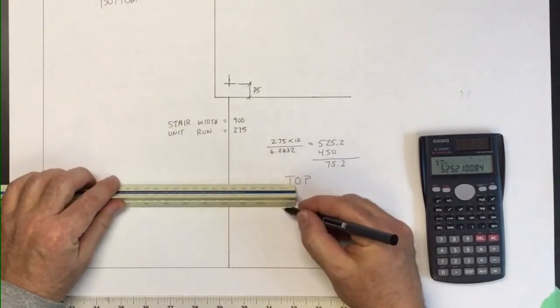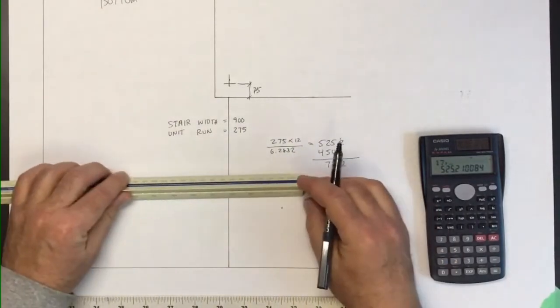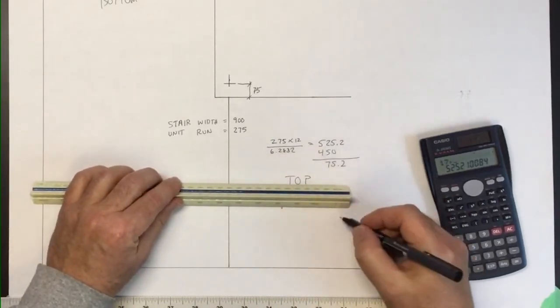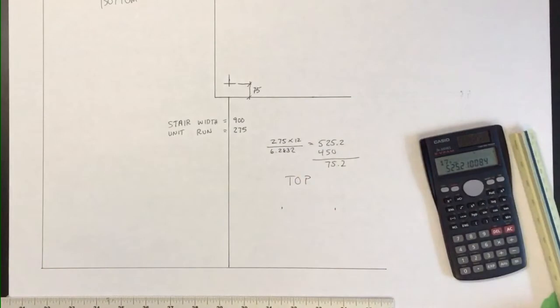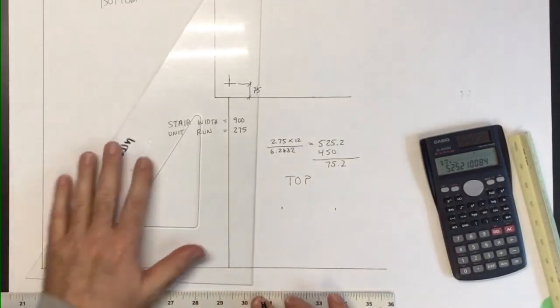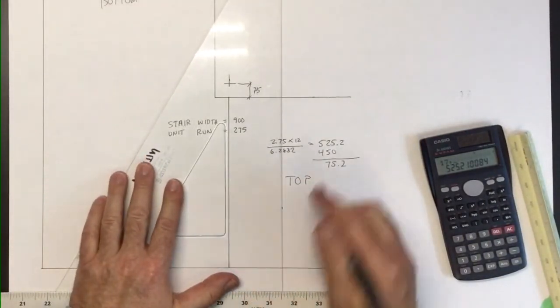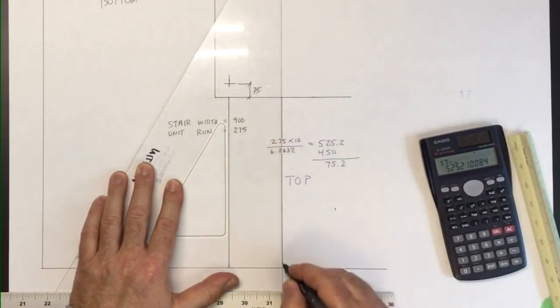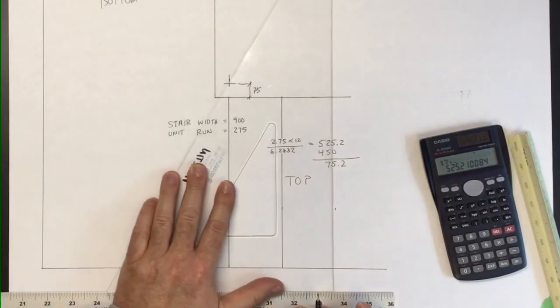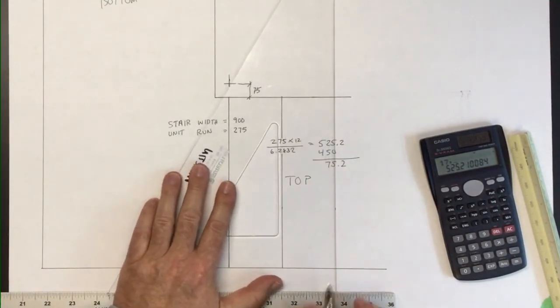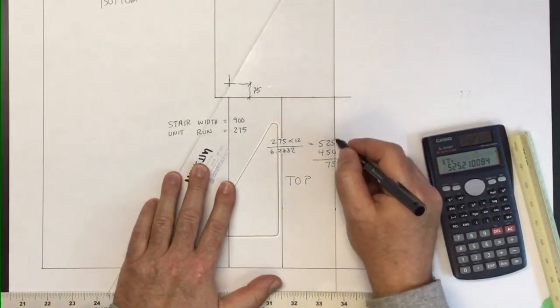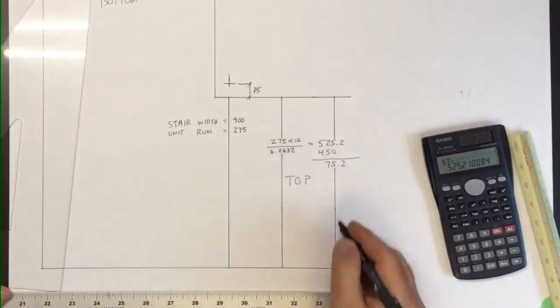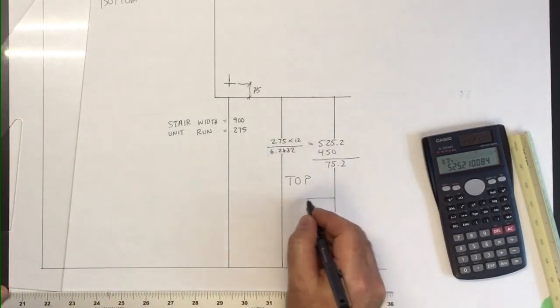In fact, I'll go another 275 because I have the room for here. Right there. This would be my path of travel down.